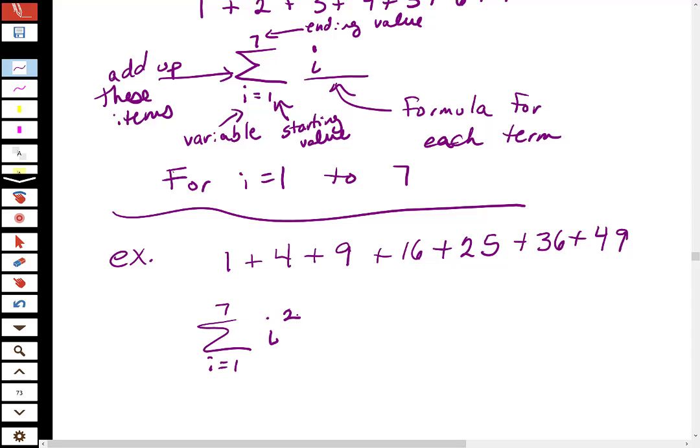Do you see that? So then, this means when I plug in I as 1, I'll get 1 squared, which is just 1, plus 2 squared, which will give me the 4, plus 3 squared, which will give me 9. Is this okay?